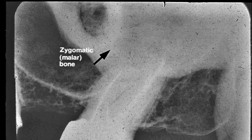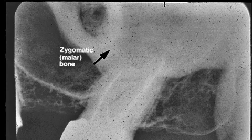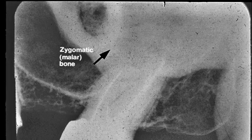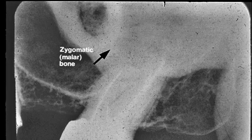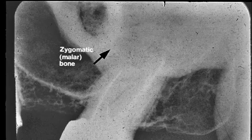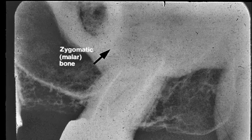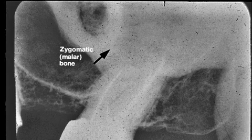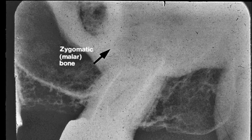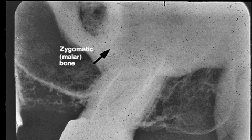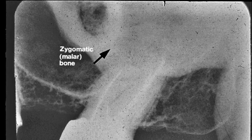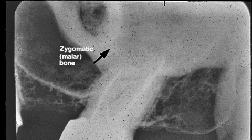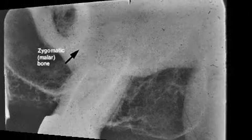The arrow points to the zygomatic or malar bone. It looks like a rectangle, and right above the arrow is a radiopaque U shape — this is the zygomatic process. The zygomatic bone extends posterior from the process.